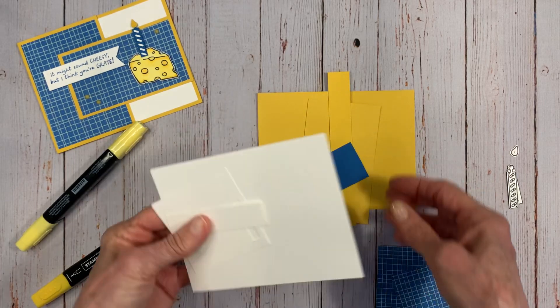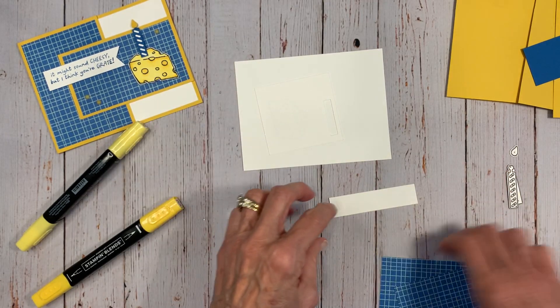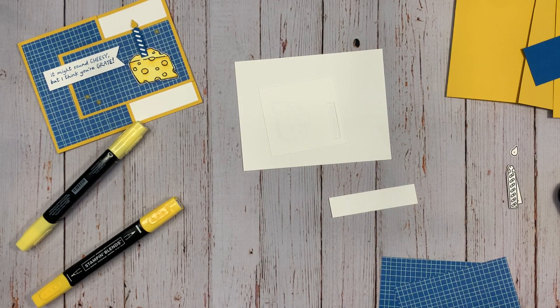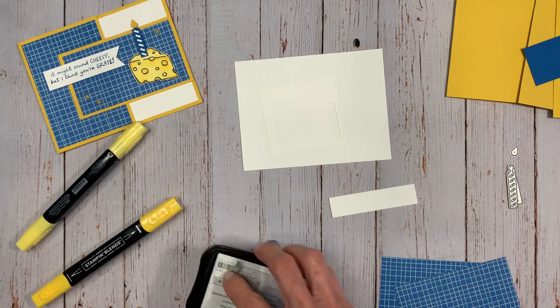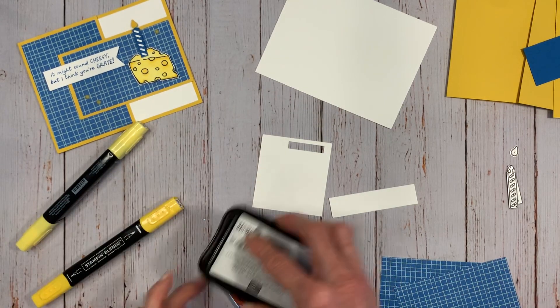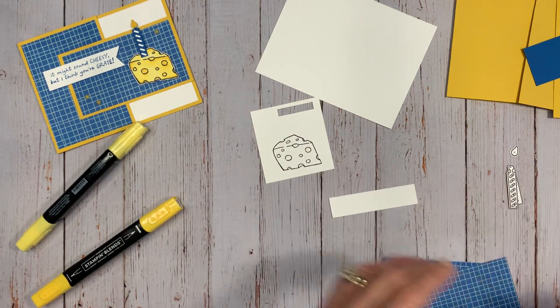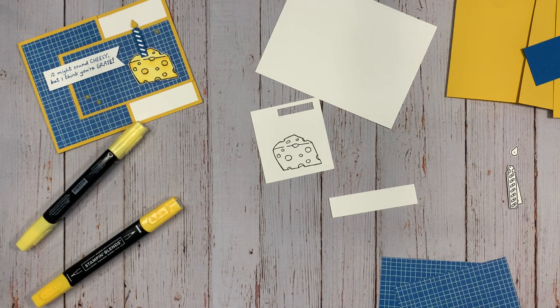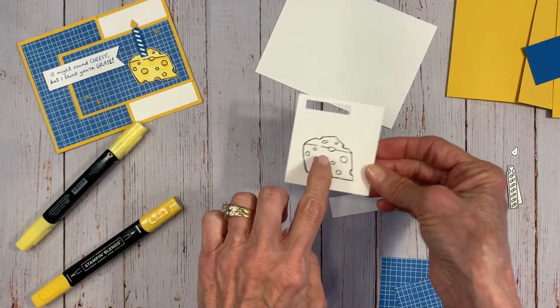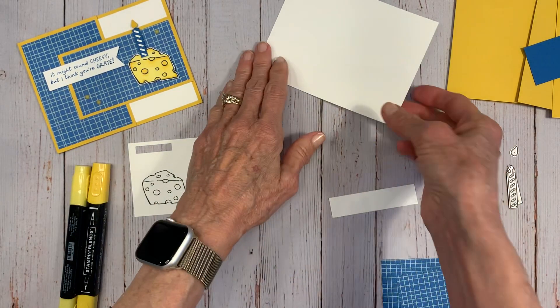So the first thing we're going to do is let's do our die cutting. And actually the first thing I want to do is I want to stamp the cheese with the Memento. And the reason for that is that you want it to dry thoroughly. I've actually already stamped one that I'm going to color but I'm going to show you. Very straightforward, it's a clean stamp so it's nice and easy to stamp with. Sometimes if you color on the Memento before it's completely dry it'll blur. So we don't want that to happen.